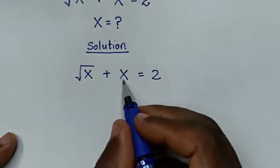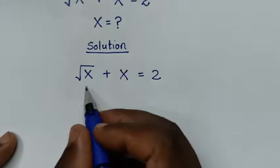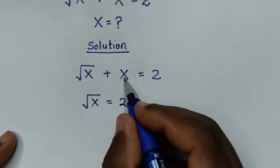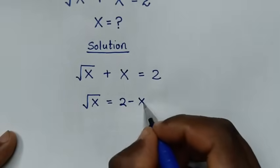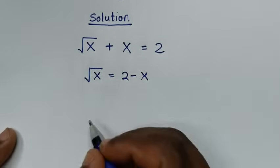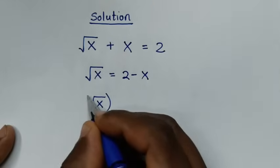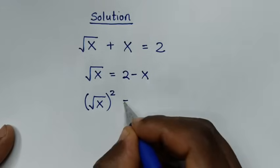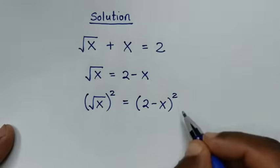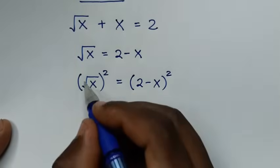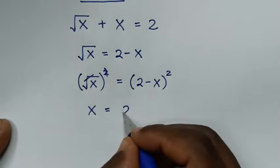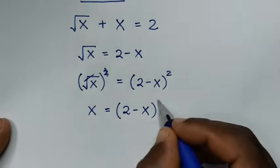In the first step, we'll take this x to the right side, so it will be square root of x is equal to 2 minus x. Then, to remove this square root, we'll square both sides. The square root squared cancels, so it will be x is equal to 2 minus x, bracket squared.